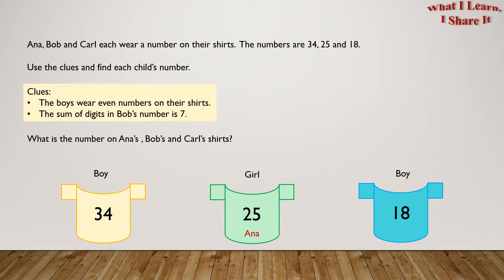Since Anna is the only girl among the three, we could put her in shirt number 25.